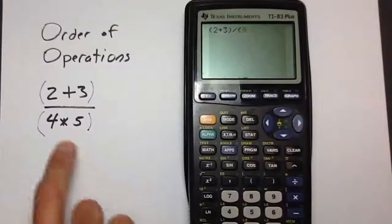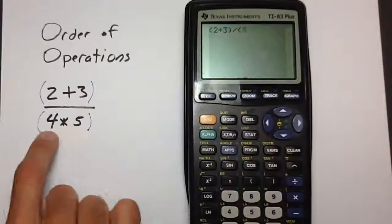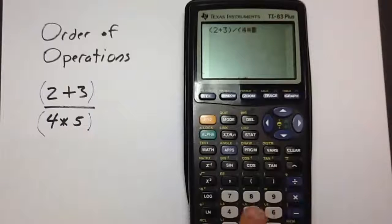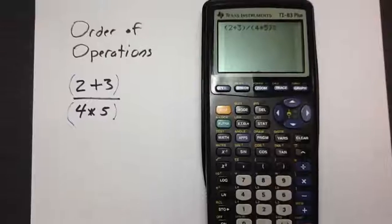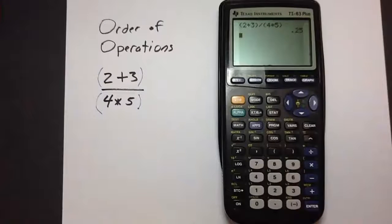We'll press the left parentheses again and enter 4 times 5 for the denominator, and then close parentheses again using this key. This gives us 0.25.